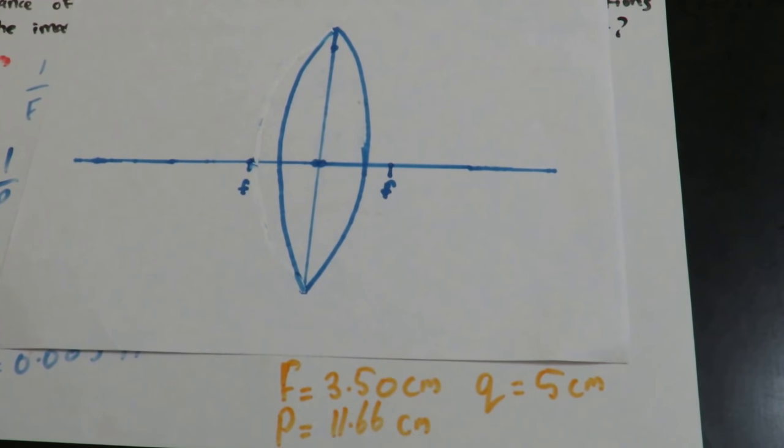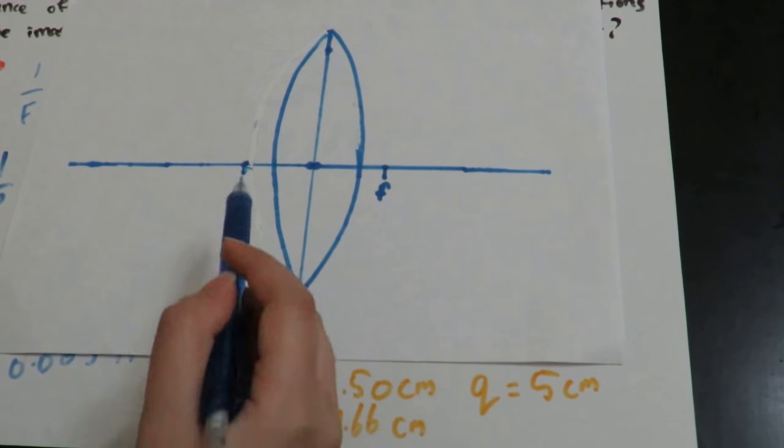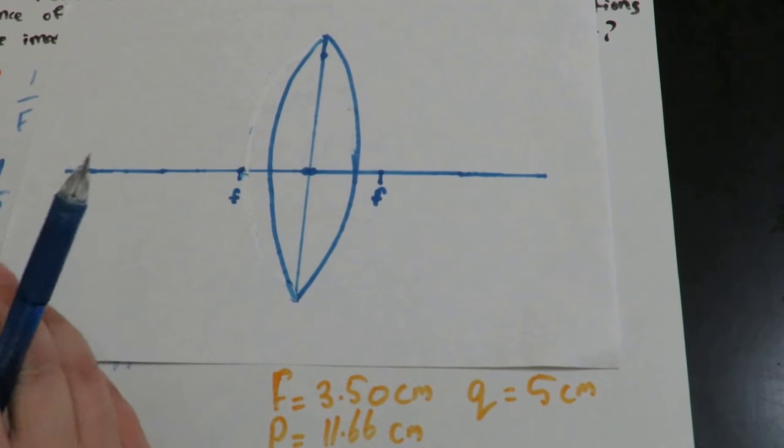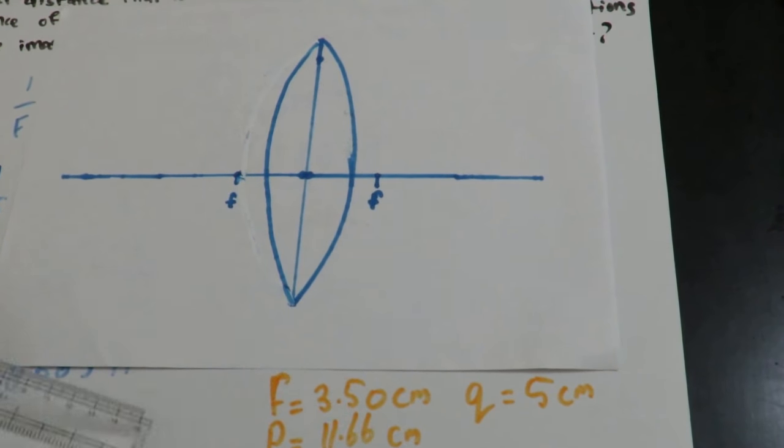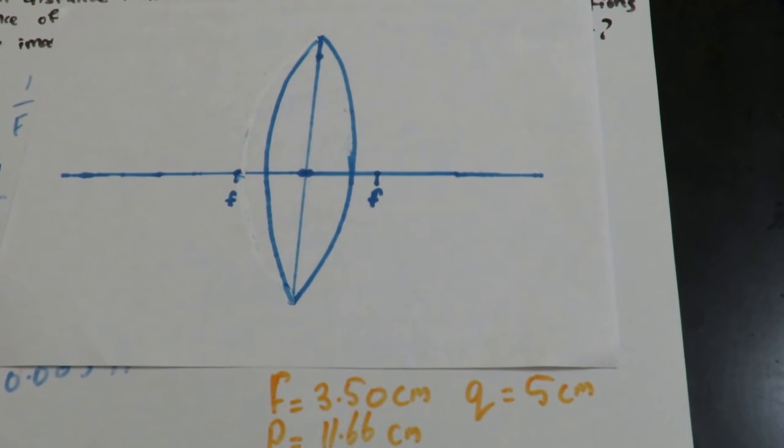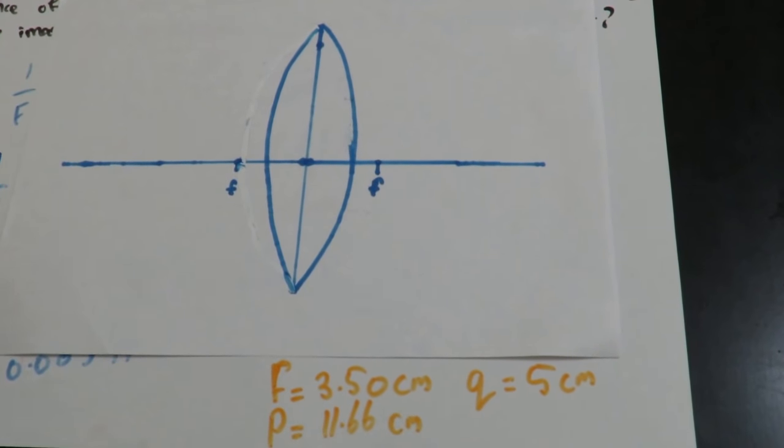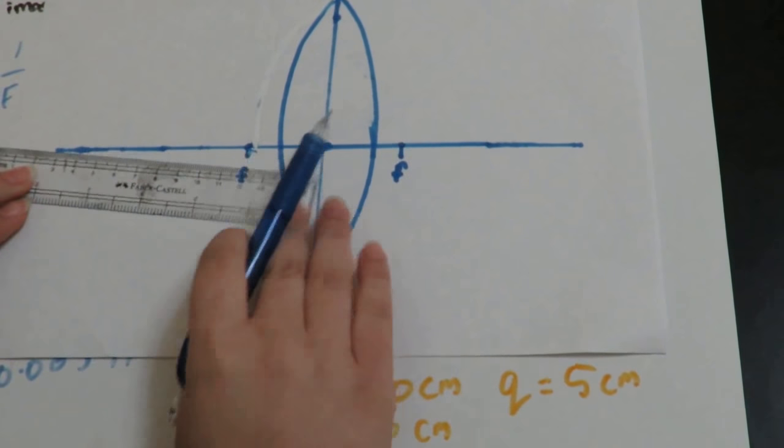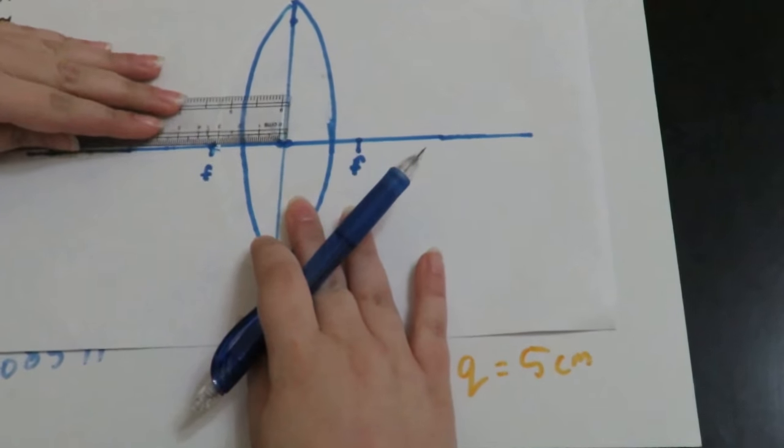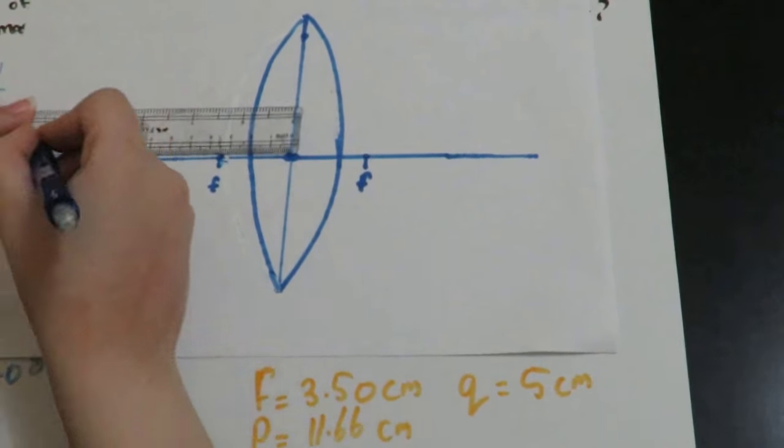F equals 3.5 cm, which is this distance. And then P, which is the object distance, equals 11.66, which is here.